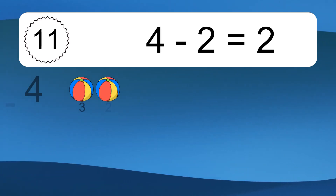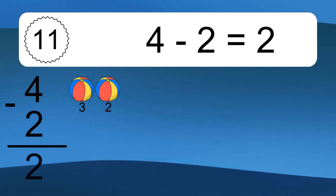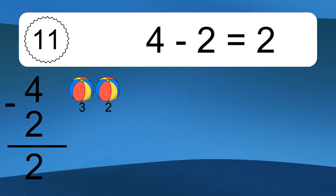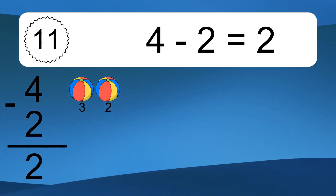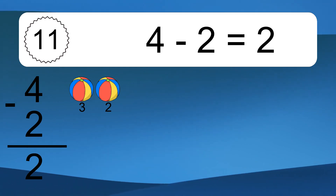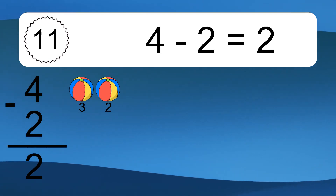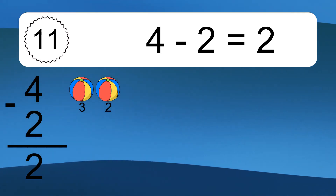4 minus 2 equals what? 4 minus 2 equals 2. Let's count it. 3, 2.